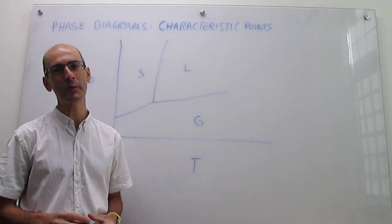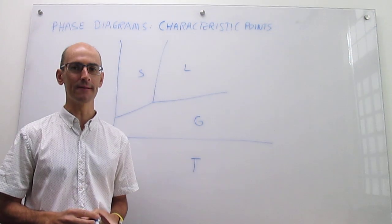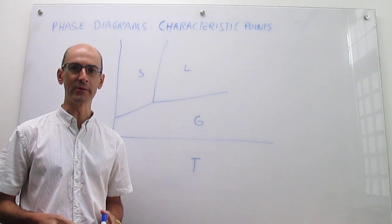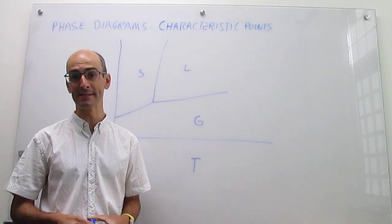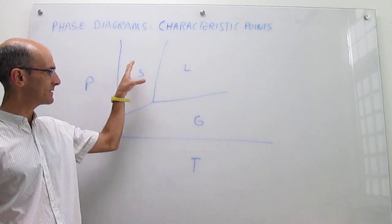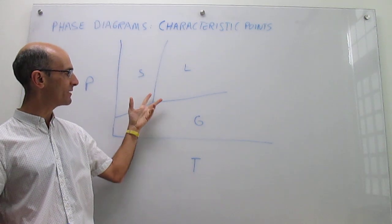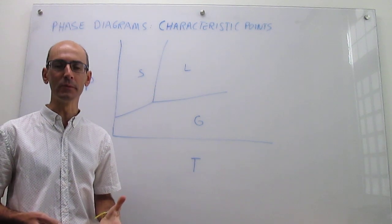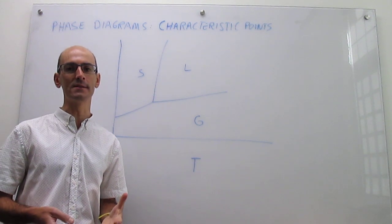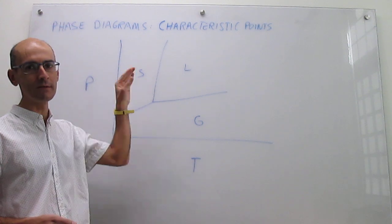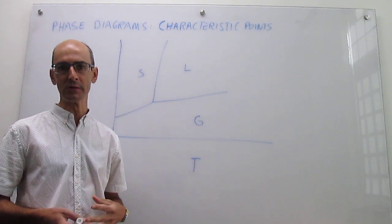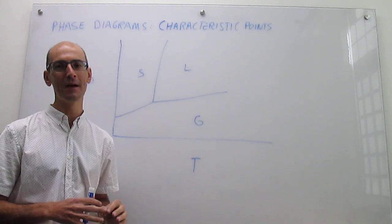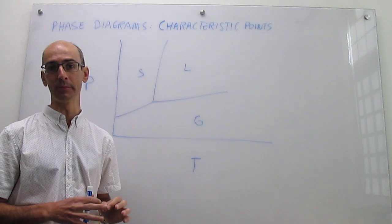In this video, we describe characteristic points in phase diagrams. Let's take a very simple generic phase diagram for a substance like this one, where you have solid, liquid, and gas phases separated by the phase boundaries. This is just a simple one because many substances exhibit more than one solid phase, but we're not going to be considering that in this video. Within this generic phase diagram, we have two characteristic points.